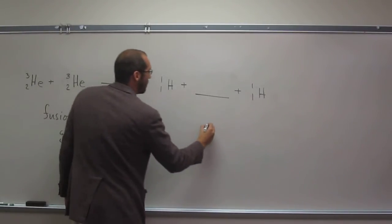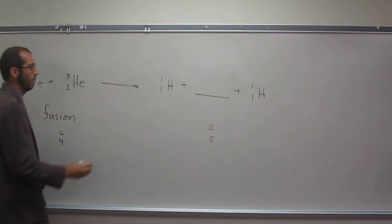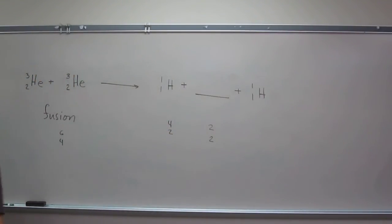So now what do we have? We have two and two. So what are we missing? We're missing four and two. What type of particle is that?